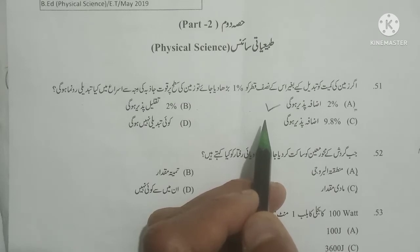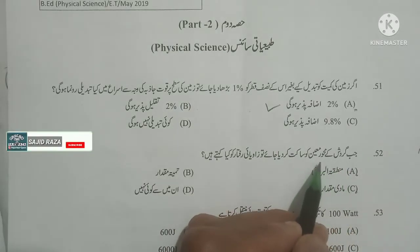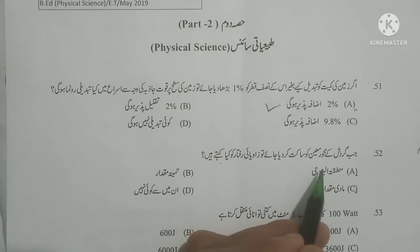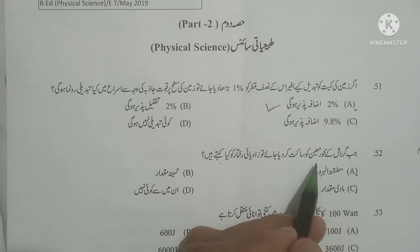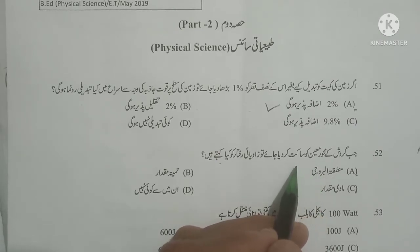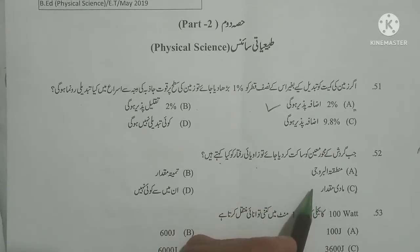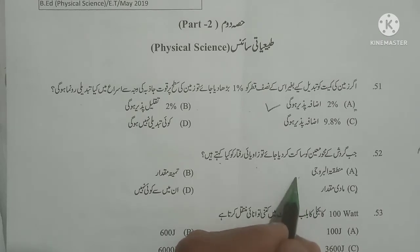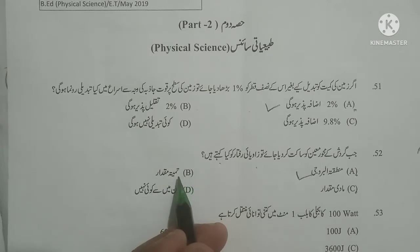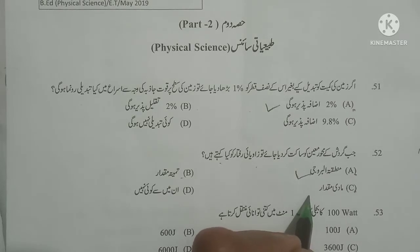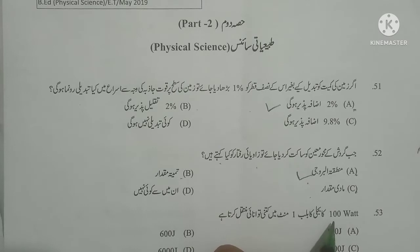Next question: Jab gardish ke mahoor moeen ko saakit kar diya jaye toh zaviyai raftaar ko kya kehtae hain? Here gardish means rotation, moeen means fixed, mahoor means axis. When the axis of rotation is fixed, then angular velocity is called — here the option given relates to a zodiac area or zodiac region. Option A is correct.